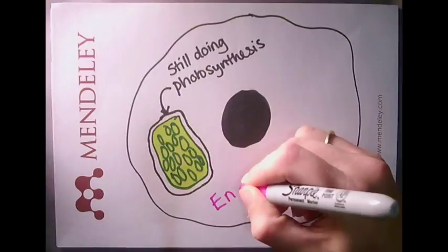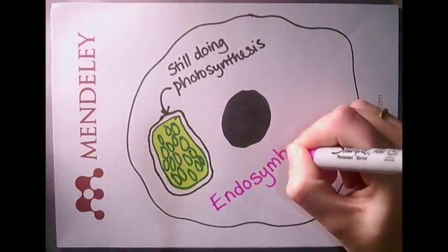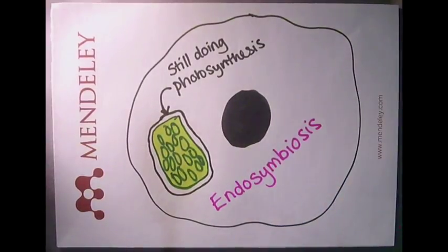So long ago in evolutionary time, chloroplasts were cyanobacteria. This process of one cell living inside another cell is called endosymbiosis.